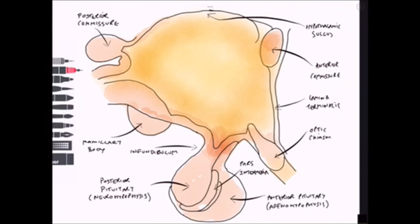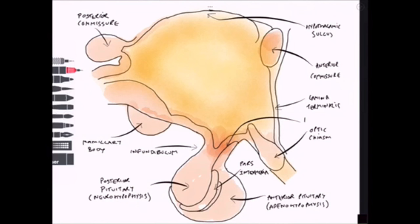That leaves us with one last structure to name here: the median eminence, which is posterior to the optic chiasm and connects the posterior pituitary to the hypothalamus.